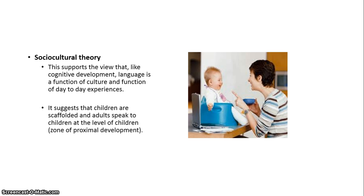Children are scaffolded by their parents or the adults they are growing with. As we discussed regarding the zone of proximal development in our face-to-face lecture, children learn as parents use simple words that become more and more complex — from one word to two-word phrases to extended speech. Children are moved from one point in their language development to another through this sociocultural theory.